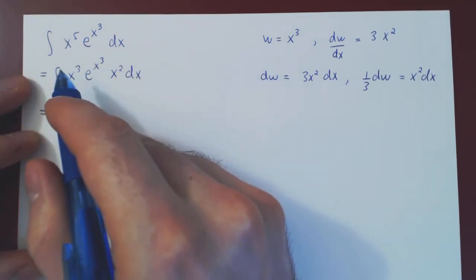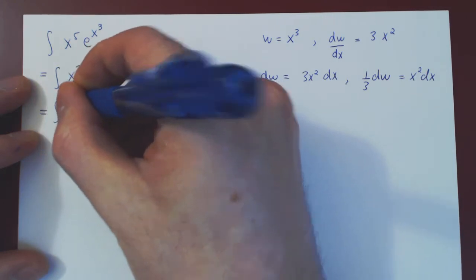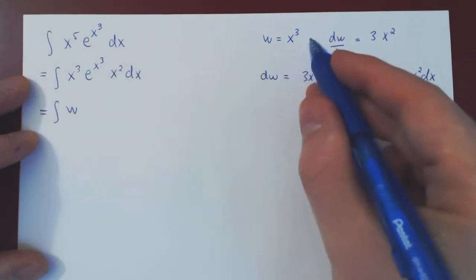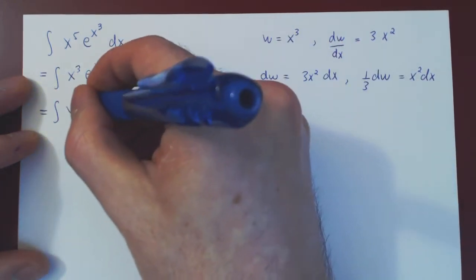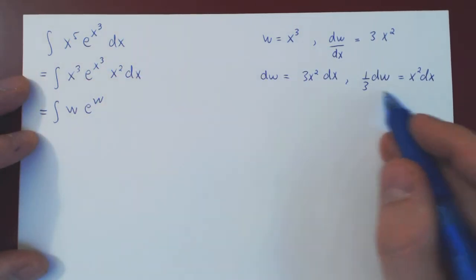So, we integrate x cubed is w. e to the x cubed, e to the w. And finally, x squared dx is a third dw.